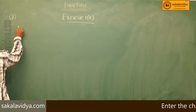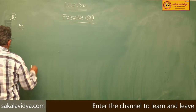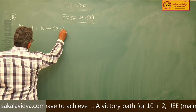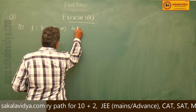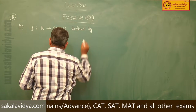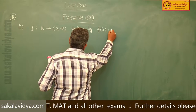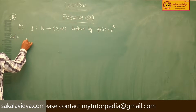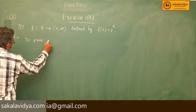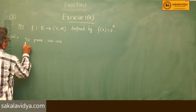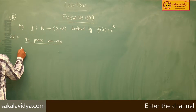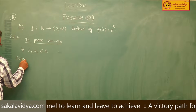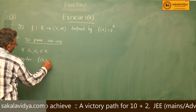Second problem: f maps ℝ to [0, ∞) defined by f(x) = 2^x. Solution — first, to prove 1-to-1. For every a1, a2 belonging to ℝ, consider f(a1) = f(a2).